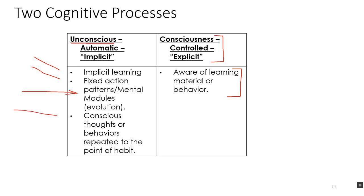A third way we get implicit processes is through conscious thoughts or behaviors that are repeated to the point of habit. Reading words and driving a stick shift were consciously learned behaviors which became so well practiced that they became habitual, and once becoming habitual, they became implicit or automatic. So here's where implicit cognitive processes come from: things we've learned implicitly, fixed action patterns inherited from our ancestors, and finally, conscious thoughts or behaviors repeated to the point of habit. That's it for this lecture — we'll be talking about this in class. Bye-bye.